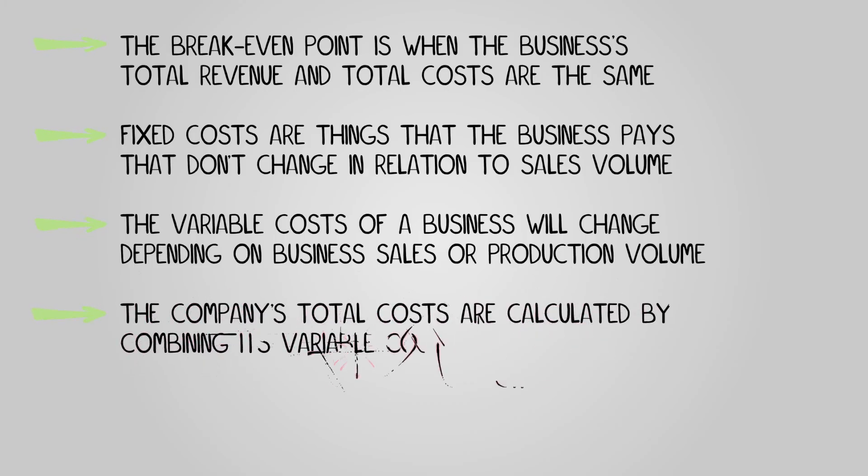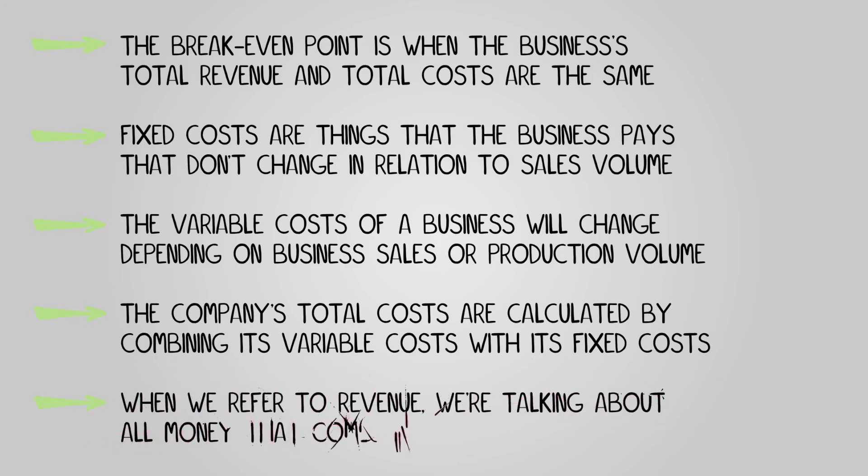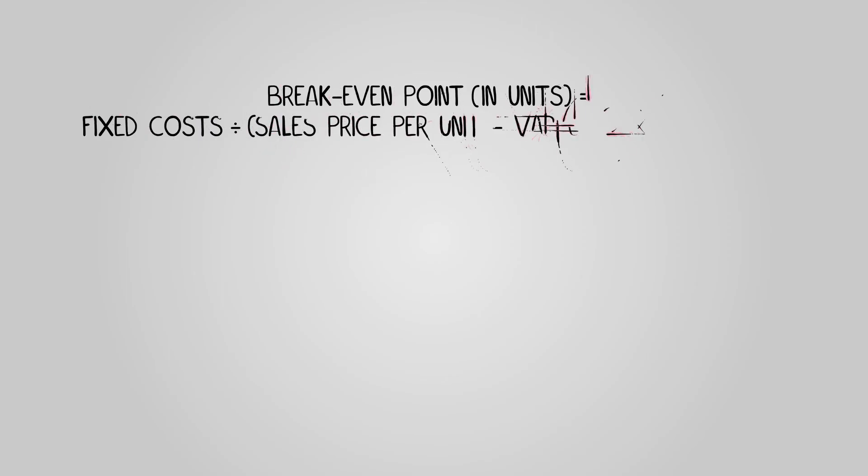The company's total costs are calculated by combining its variable costs with its fixed costs. When we refer to revenue, we're talking about all money that comes into the business from sales. The break-even point in units can be calculated as fixed costs divided by sales price per unit minus variable cost per unit.